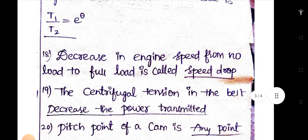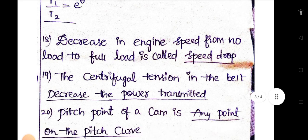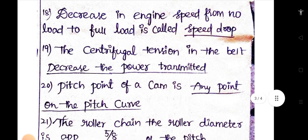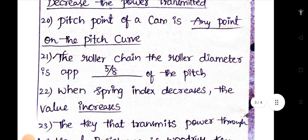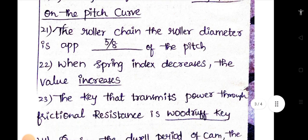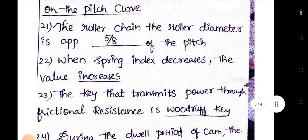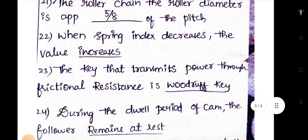Decrease in engine speed from no load to full load is called speed drop. The centrifugal tension in the belt decreases the power transmitted. Pitch point of cam is any point on the pitch curve. The roller chain, the roller diameter is 5 by 8 of the pitch. When spring index decreases, the value increases.